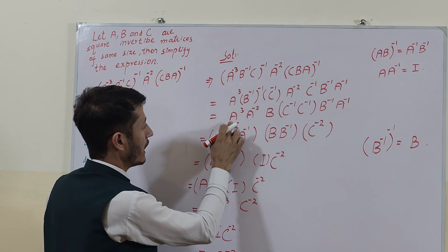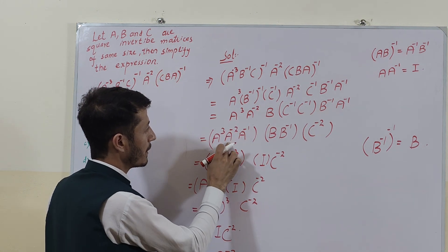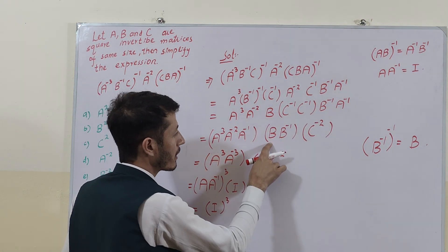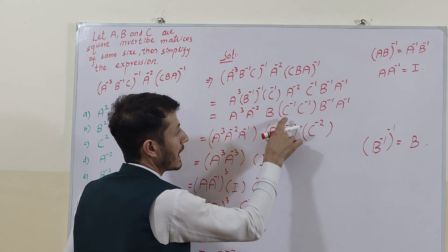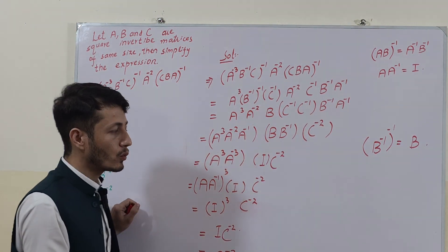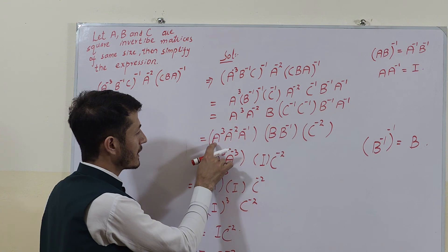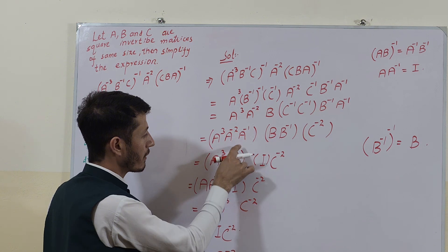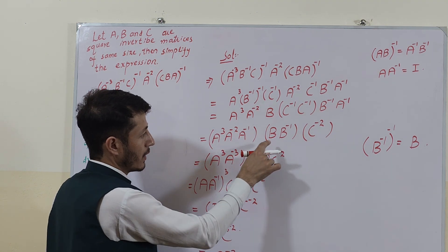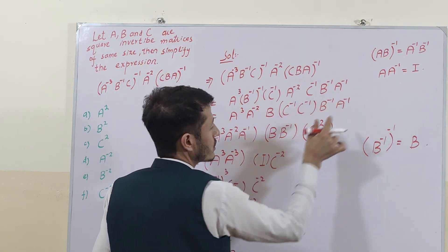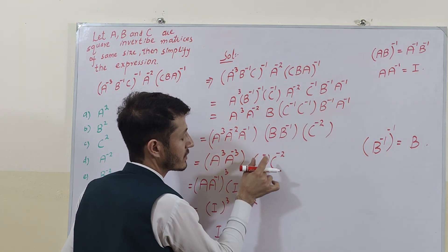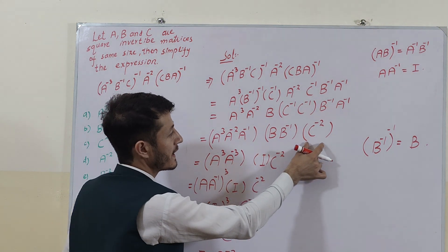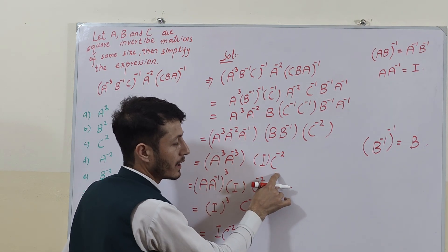So we have A^(-3) · A^(-2) · A^(-1), also B^1 and B^(-1), which gives us C^(-2). I can write this expression in the form of A^3 and A^(-3). This property is used: a matrix multiplied with its inverse gives us the identity matrix.